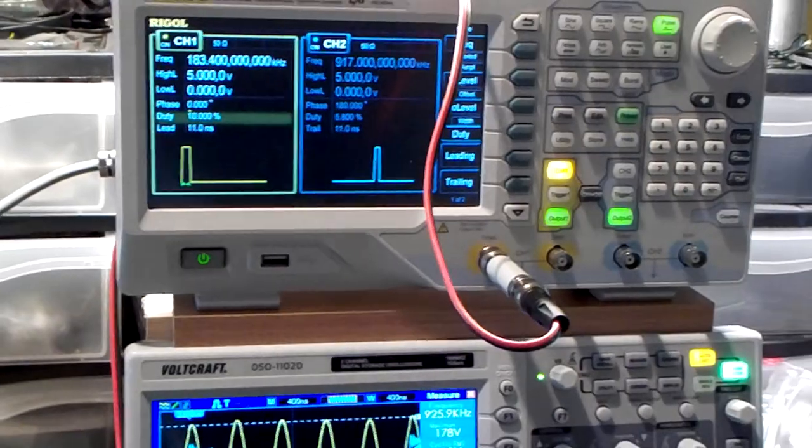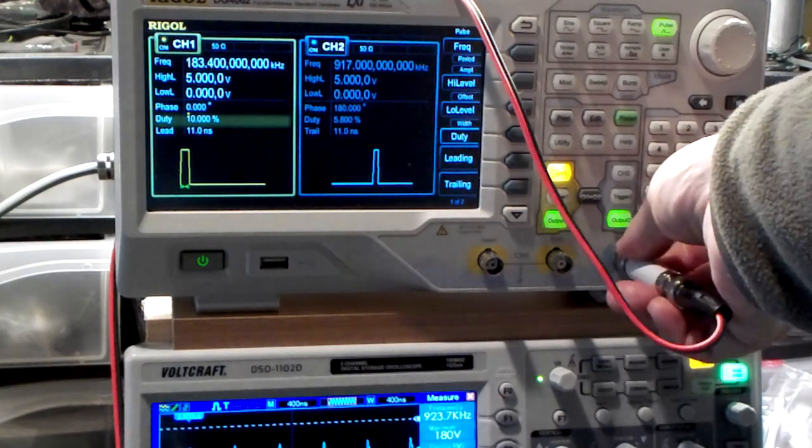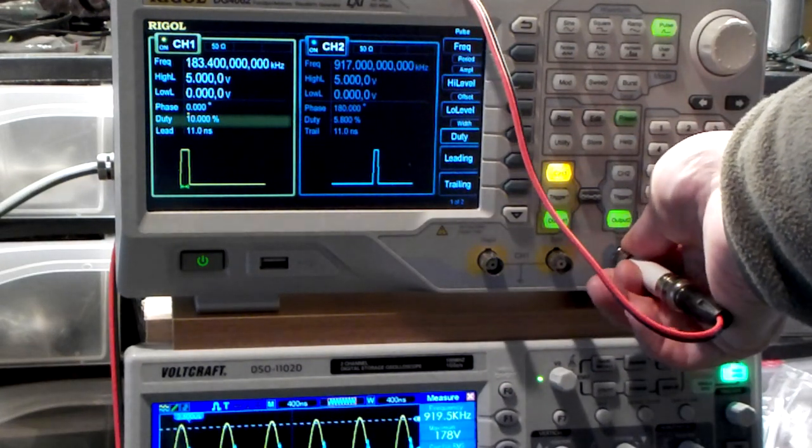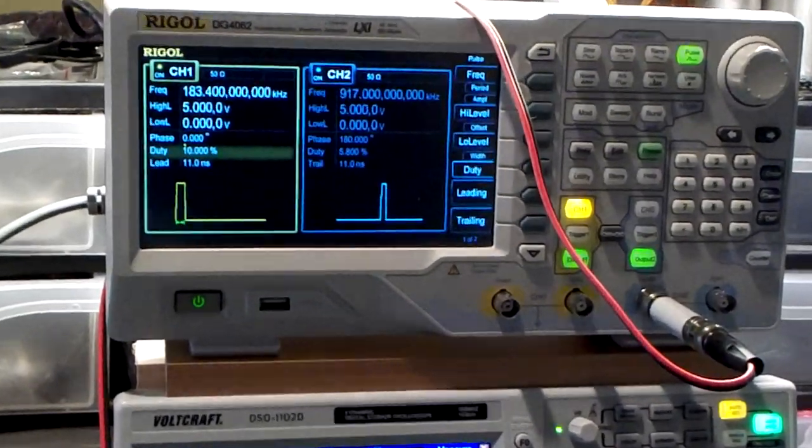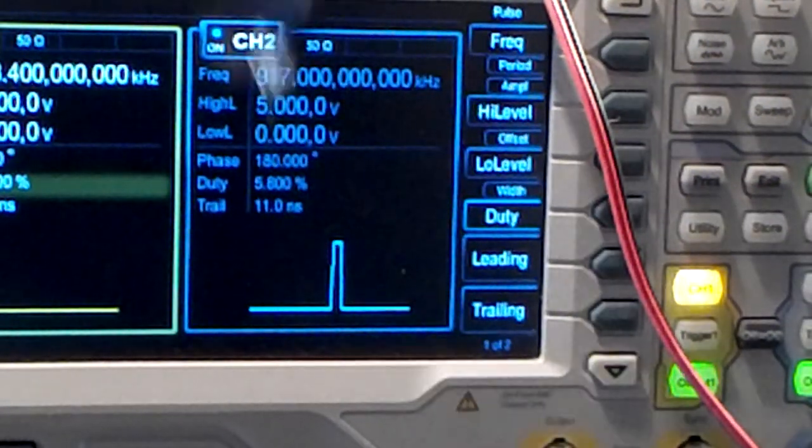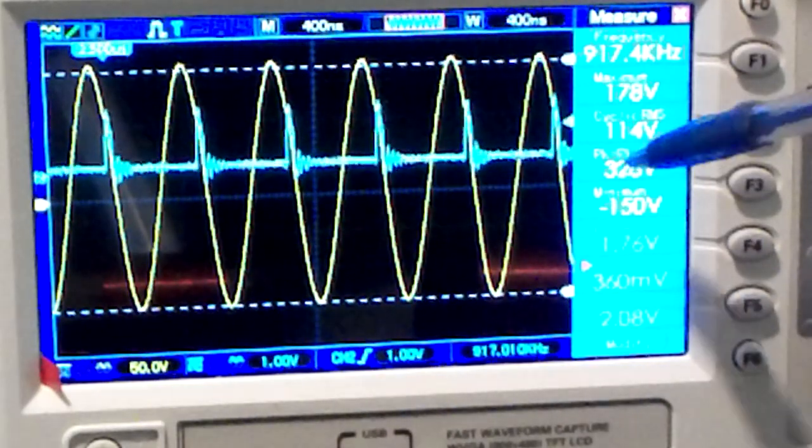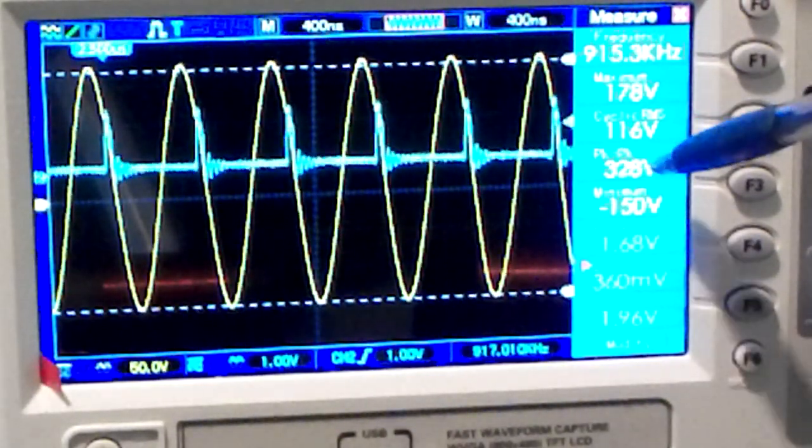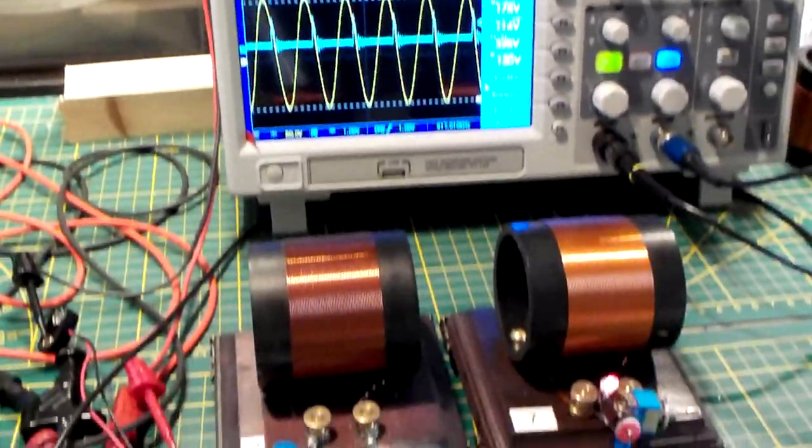I'm now going to change the output on the signal generator to the other channel. The other channel is set without free oscillations, to the maximum frequency, but with a limited duty cycle. As you can see it is only 5.8 percent. But that is done to achieve the same voltage as with the previous. The peak-to-peak value is back again 328 volts. And that's why we are not seeing any difference on the LED.